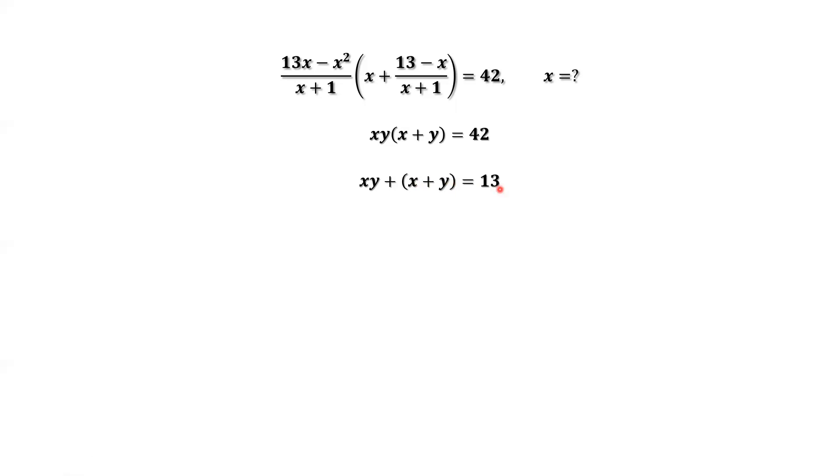We read the results this way. Consider x times y as a number, x plus y is another number. The product of the two numbers equals 42. The sum of two numbers equals 13.